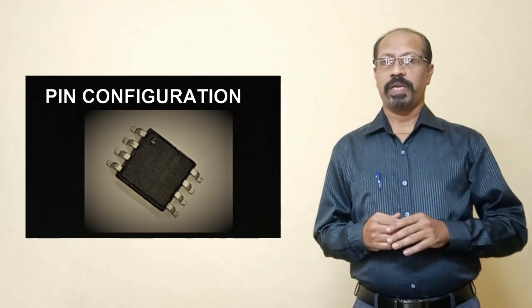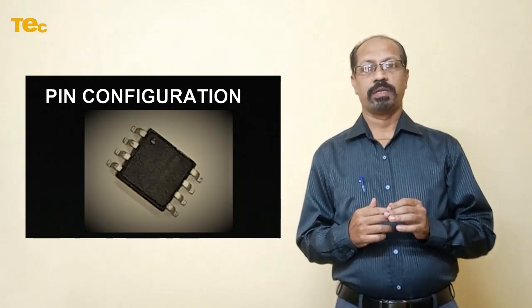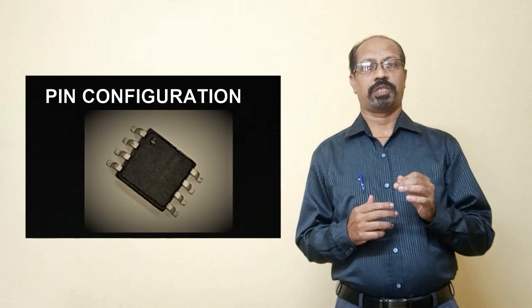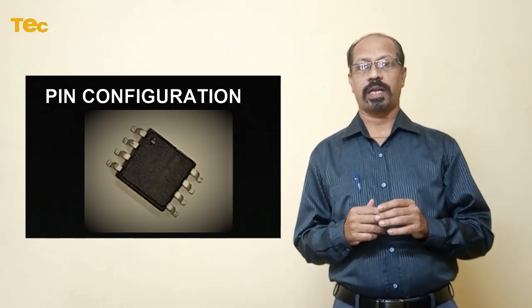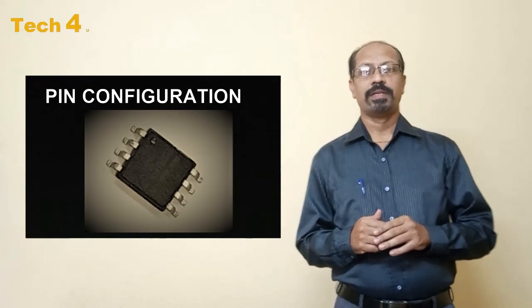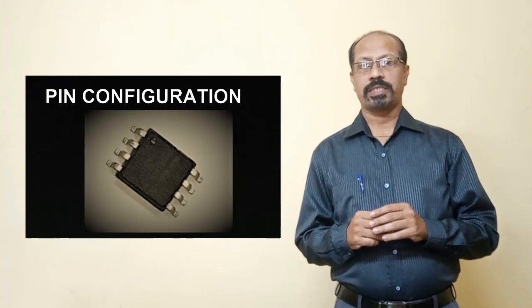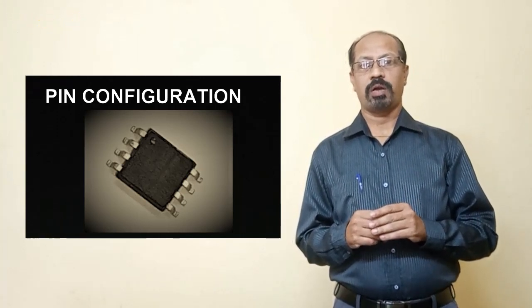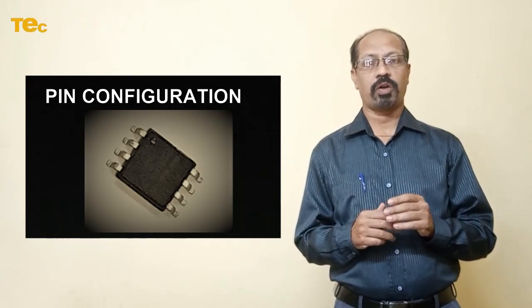Standard SPI instructions use the unidirectional data input pin to serially write instructions, addresses, or data to the device on the rising edge of the serial clock input pin. Standard SPI also uses the unidirectional data output to read data or status from the device on the falling edge of the clock.